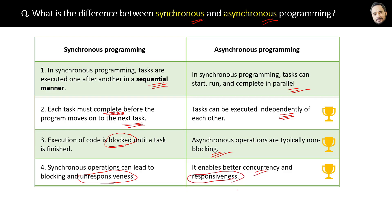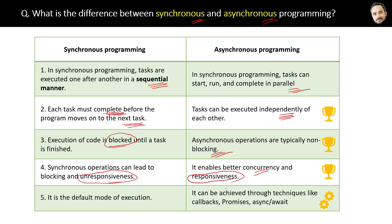The last difference is that synchronous is the default mode of execution — you do not have to write any extra code for it. But asynchronous programming can be achieved through techniques like callbacks, promises, or async and await.